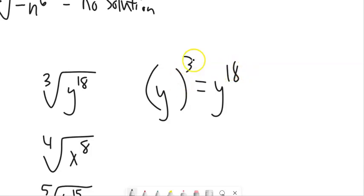And I know when I have a power to a power, I multiply. So I'm looking for what can I multiply here by 3 to get to 18. So it must be 6. So this is y to the sixth.